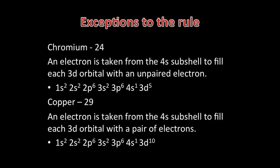When we get to chromium, an electron is taken from the 4S subshell so all D orbitals contain one unpaired electron. This happens because this arrangement is more stable, and the 3D and 4S subshells are very close in energy. So the electron arrangement of chromium can be written as 1S2, 2S2, 2P6, 3S2, 3P6, 4S1, 3D5.